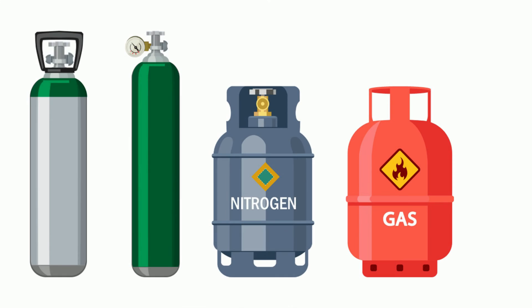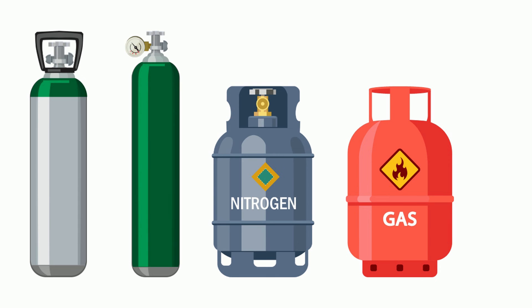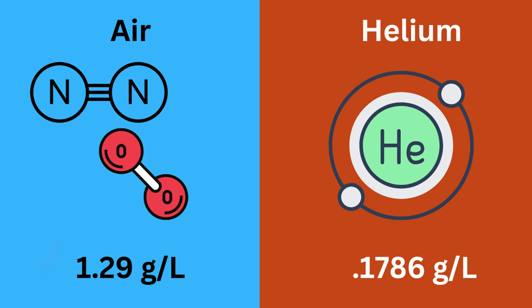The density of a gas can also be affected by the type of gas. Different gases have different densities. For example, the density of air is about 1.29 grams per liter, while the density of helium is about 0.1786 grams per liter. I hope that was helpful,